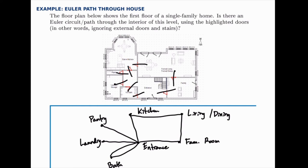Once we have this graph, we can ask whether there's an Euler circuit or path just by counting the degree of each node. The pantry has a degree of one, and the laundry also has a degree of one. Notice right away we've got two odd nodes, so if we find any other odd nodes we'll know there's no Euler path or circuit. We already know there's no Euler circuit possible, but there could be an Euler path if all the rest are even.